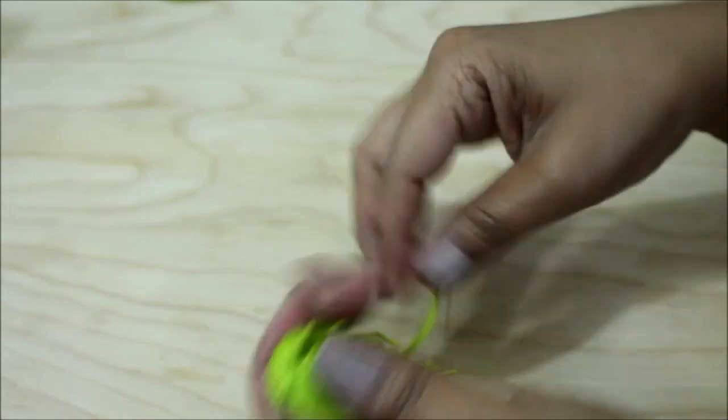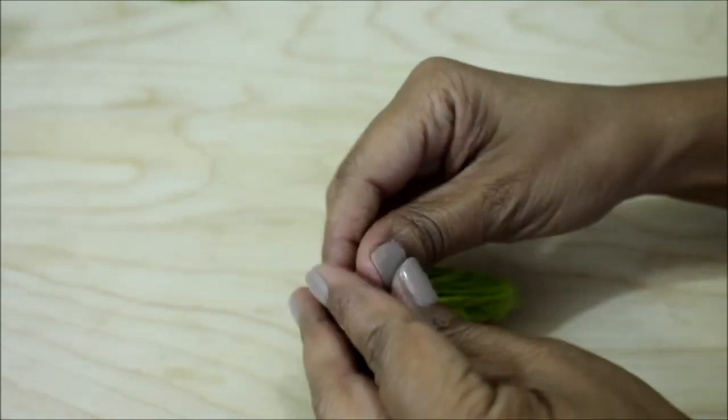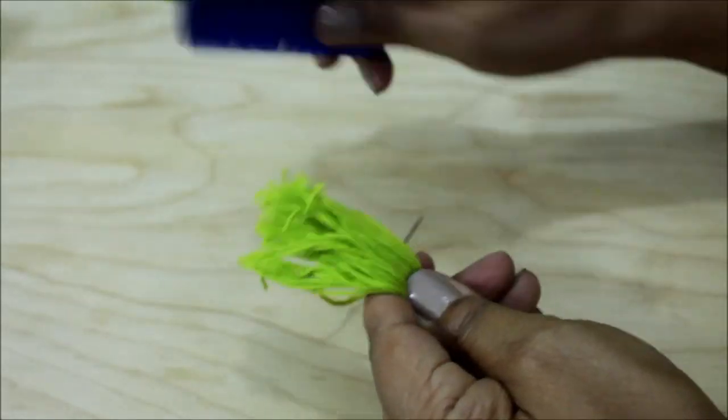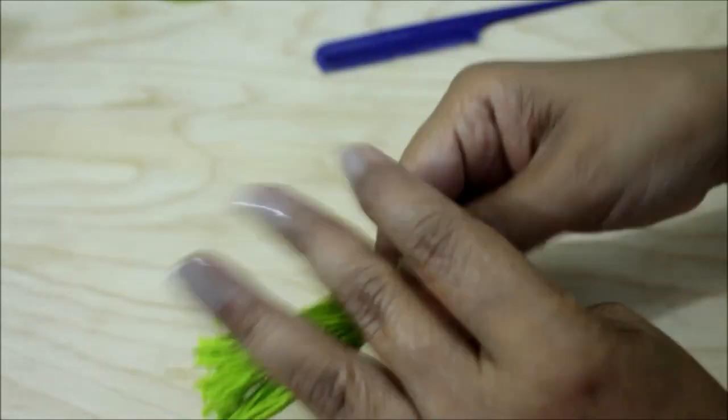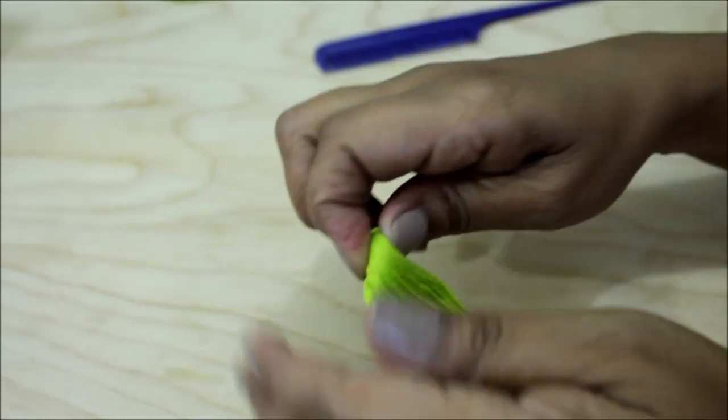In my case I like to make sure that all of my strands are nice and neat, so I take a comb and I comb them out, especially if it's been wound up. Sometimes the fibers get kind of wrinkled.